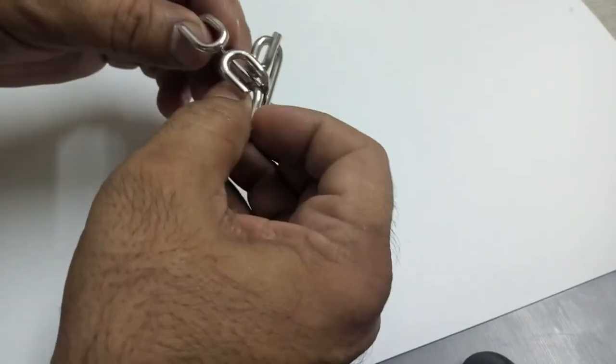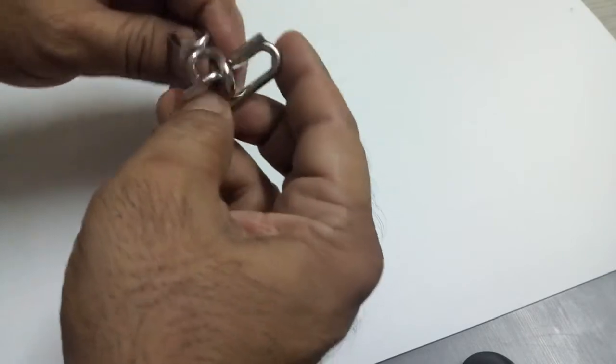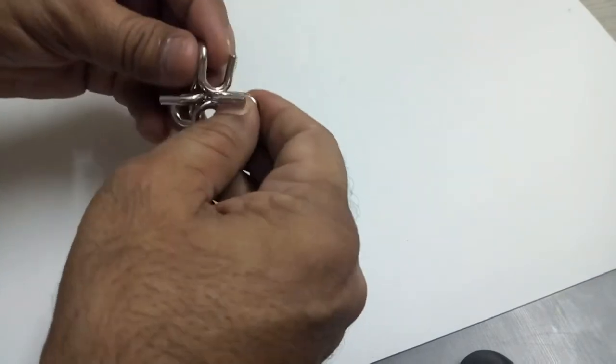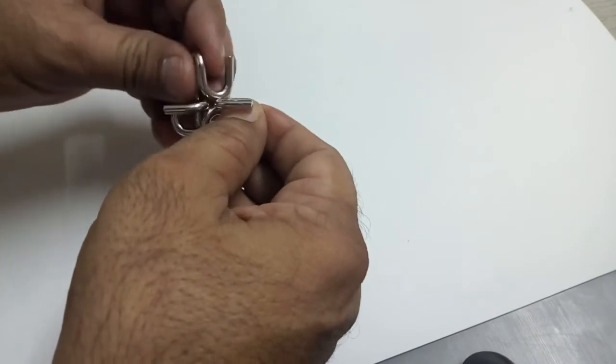We have to bring the open ends together and try to slide them outside by twisting both the things.